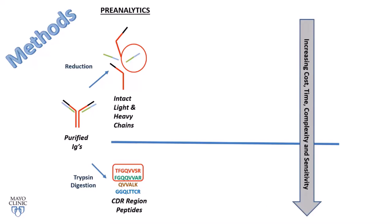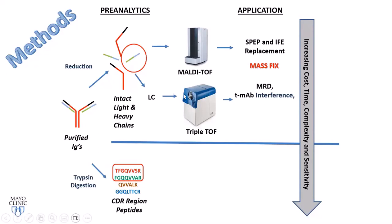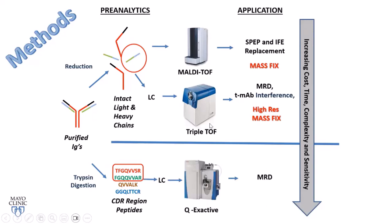We have a couple of techniques. The first is the multi-top method, which we use currently in the lab to replace serum protein electrophoresis — we've already replaced immunofixation electrophoresis. We coined the term 'Mass Fix,' which has stuck in the literature. You can also do chromatographic separation of heavy and light chains on a higher-resolution instrument — I'll call that high-resolution Mass Fix. The bottom approach uses an Orbitrap to look at CDRs, mostly for MRD analysis. As you go down the list, cost and complexity increase but sensitivity also increases.